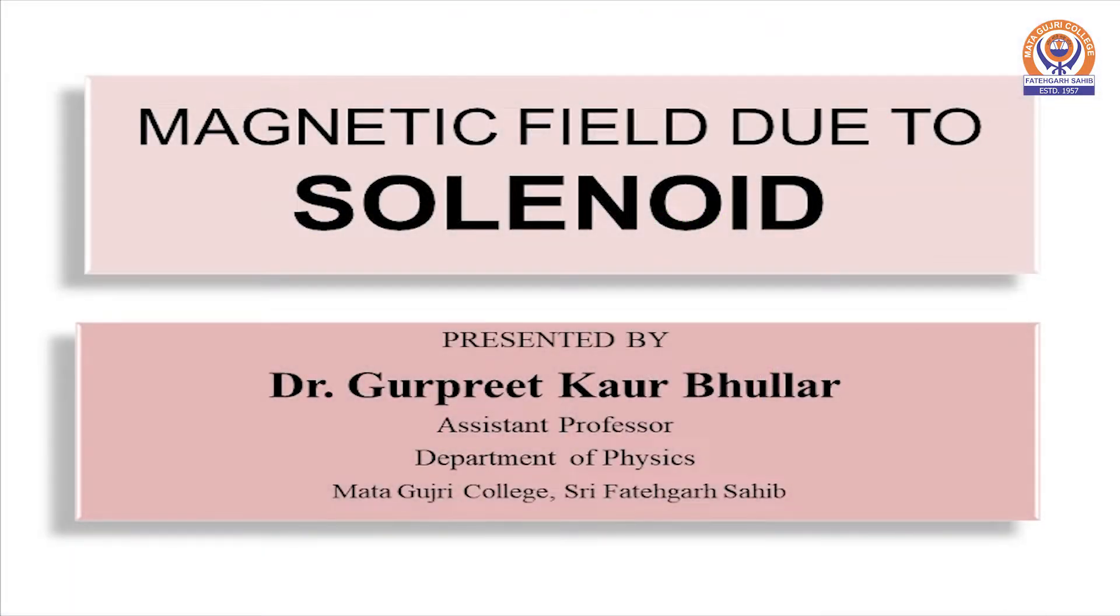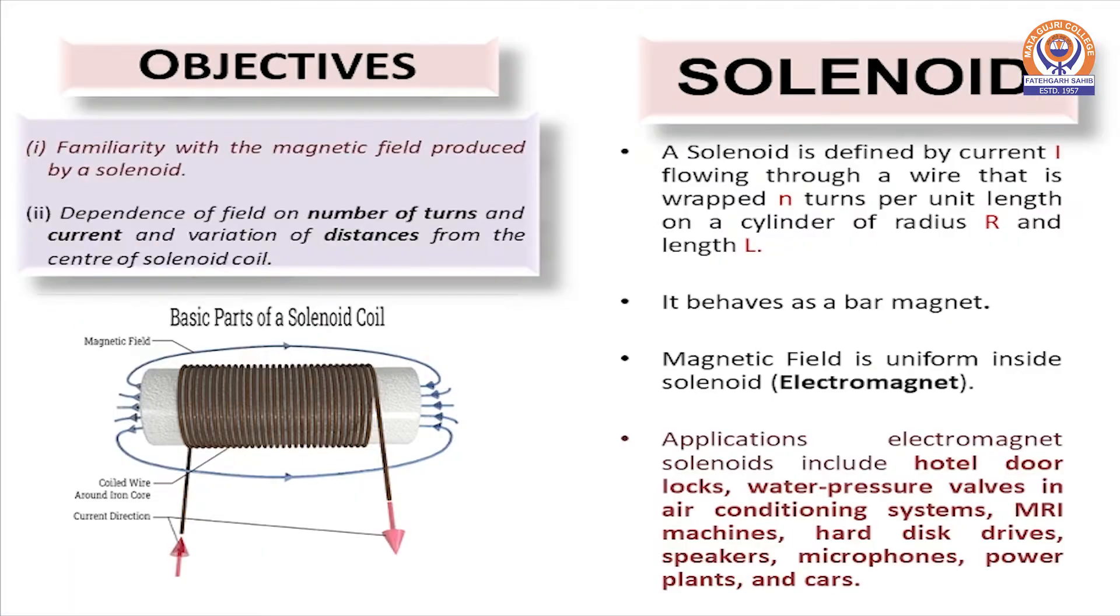Study of magnetic field due to solenoid experiment has objectives like familiarity with the magnetic field produced by the solenoid, dependence of field on number of turns, variation in current, and variation of distances. Basic parts of the solenoid coil are shown in this figure.